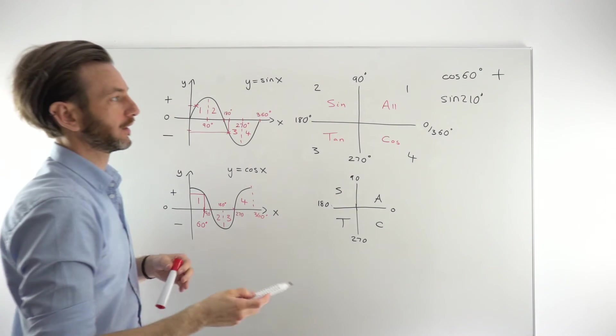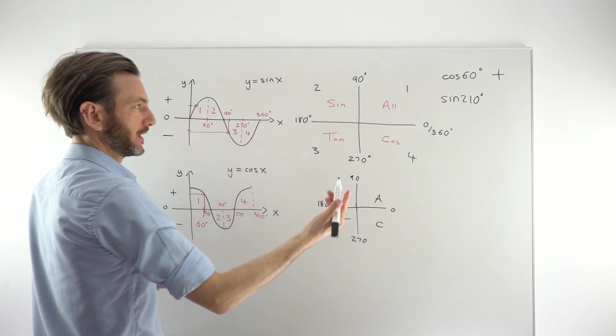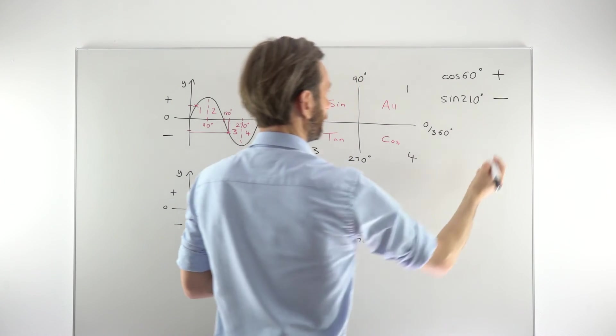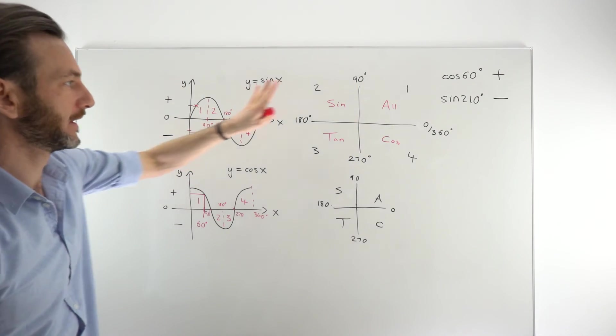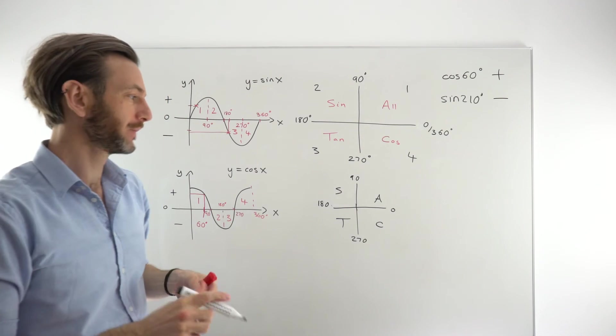Going to the CAST diagram, 210 is in the third quadrant, the tan quadrant, where sine is negative. So that should be negative. You should never get information from the graph and the CAST diagram which conflict. They should validate each other.